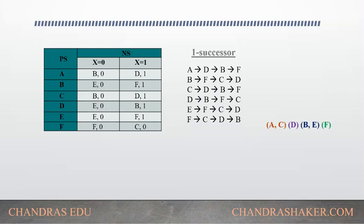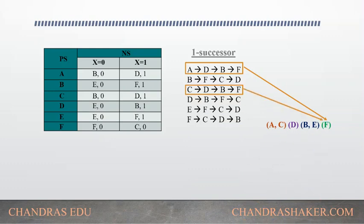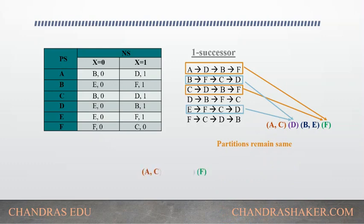We check whether a and c still belong to the same partition and whether b and e still belong together. For the 1-successor, state a points to f and state c also points to f — so no further partition is possible within {a, c}. For states b and e: b points to d and e also points to d — so no further partition is possible there either. The final partition is: {a, c}, {d}, {b, e}, and {f}. This will remain stable even with further distinguishability checks.